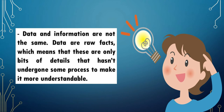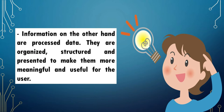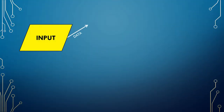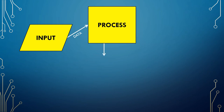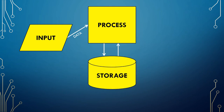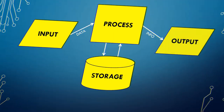Data and information are not the same. Data are raw facts — bits of details that haven't undergone processing to make them more understandable. Information, on the other hand, is processed data. It is organized, structured and presented to make it more meaningful and useful for the user. All these operations are necessary for a computer to process data. Without one of them, the whole operation would be useless.